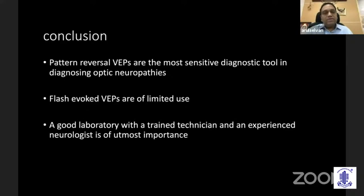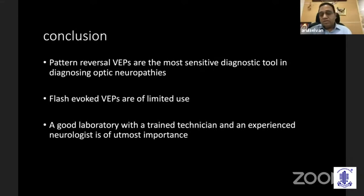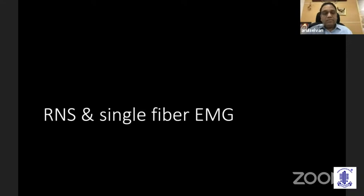To conclude on visual evoked potentials: pattern reversal potentials are the most important and sensitive diagnostic tools for diagnosing optic neuropathy. When myelin is damaged, demyelination causes delayed P100 latency with well-preserved amplitude. Flash evoked responses have limited value but have certain clinical indications such as uncooperative, sleepy, or drowsy patients, elderly patients, or children. A good laboratory with a trained technician and experienced neurophysiologist is essential. We'll now move on to the next topics: repetitive nerve stimulation and single fiber EMG.